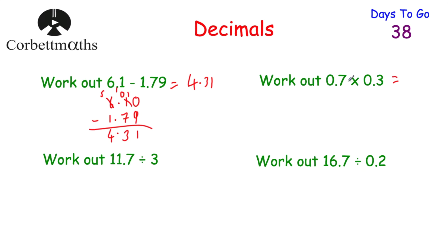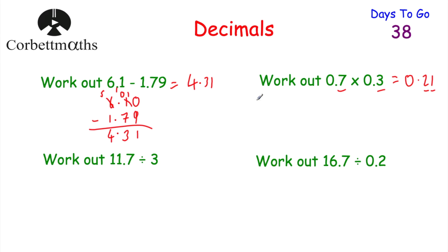Another approach for 0.7 × 0.3: count the digits after the decimal point — one in 0.7 and one in 0.3, so our answer needs two digits after the decimal point. Seven times three is 21, and written with two decimal places that's 0.21. Either approach is fine as long as you're confident with it.